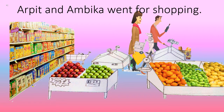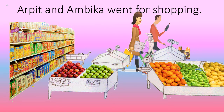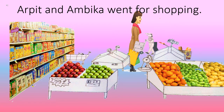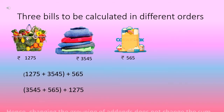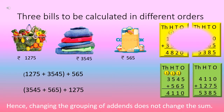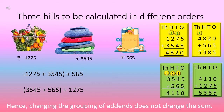Now, before proceeding further, let's meet Arpit and Ambika. Arpit and Ambika went shopping recently and bought some fruits and vegetables, some clothes, and some dairy products from the market. They bought all these things from three different shops, so they received three different bills. They paid Rs. 1,275 for fruits and vegetables, Rs. 3,545 for clothes, and Rs. 565 for dairy products — like milk, cream, cheese, and butter.